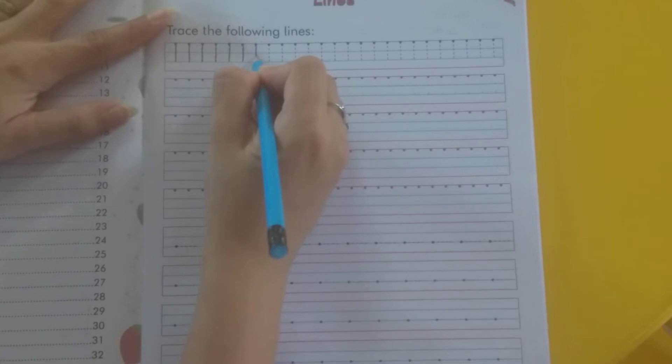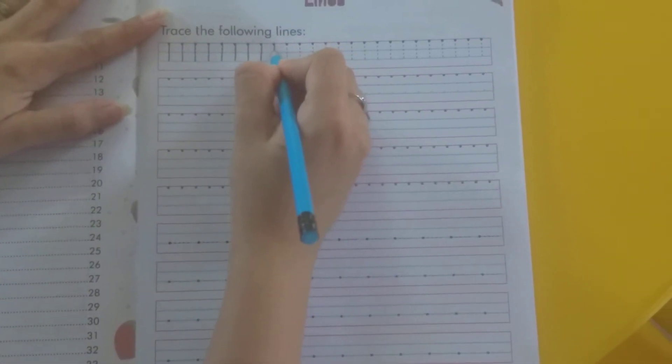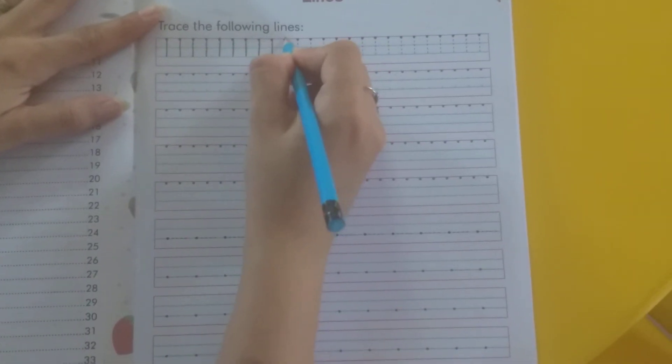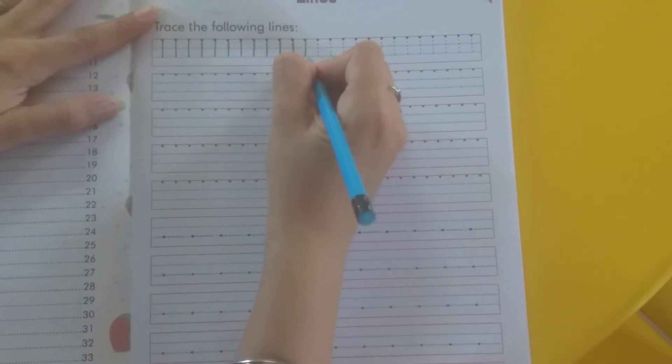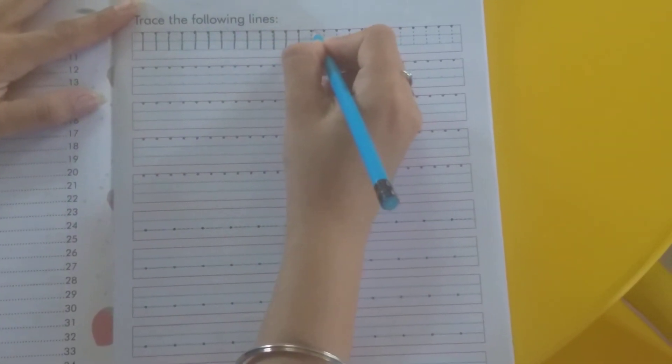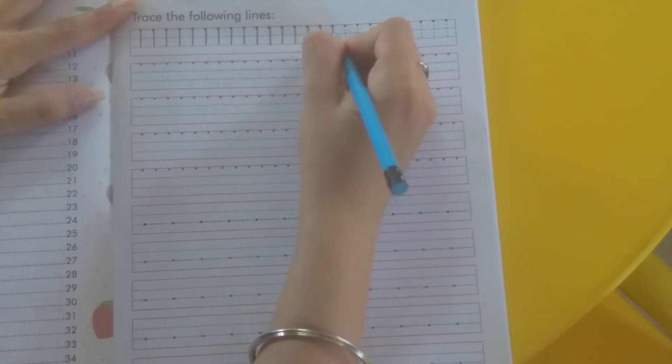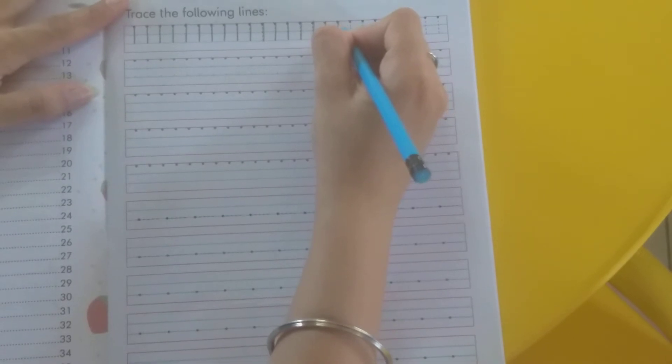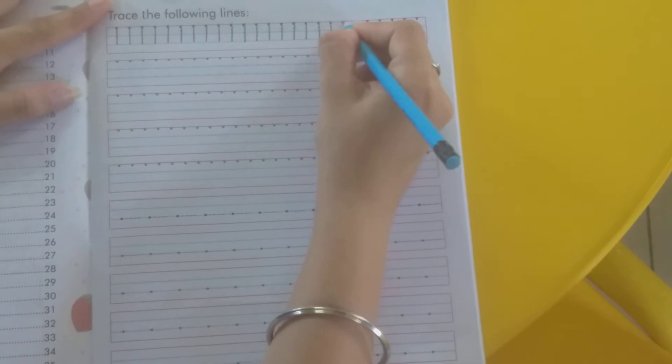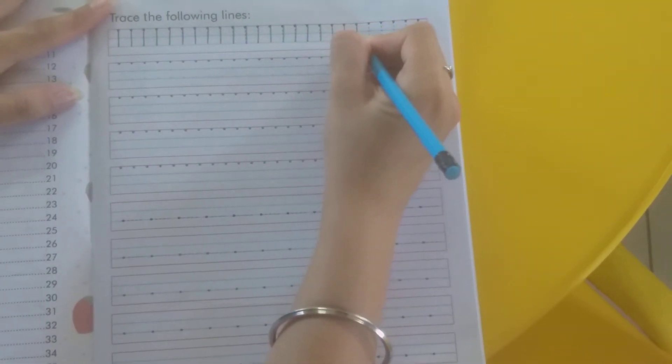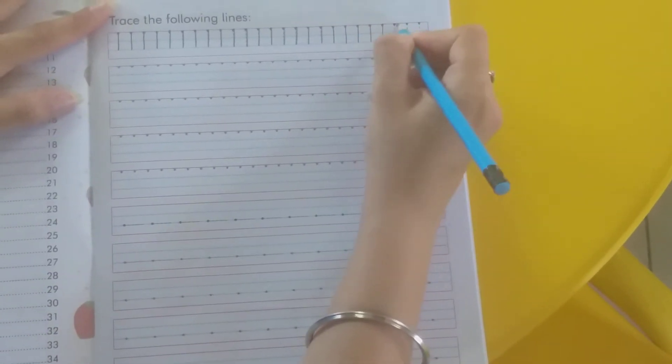From up to down. Up to down. Up to down. Ye toh aasani hogi aapko toh lines abhi. Bhoat easy lines hai ye toh. Ma'am aapke liye ek line complete karegi. The rest is your fun work. Okay? Up to down. Up to down. Upar se neechi.